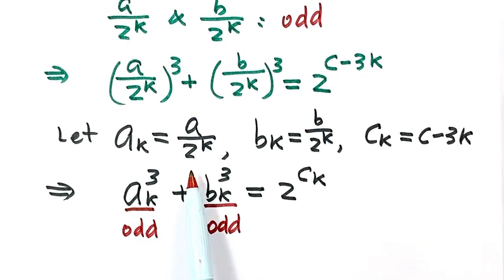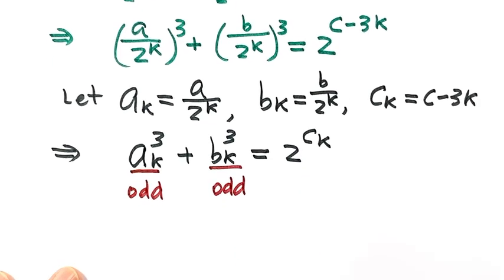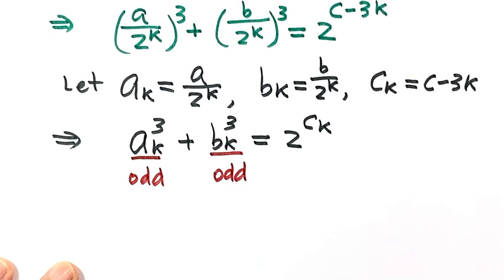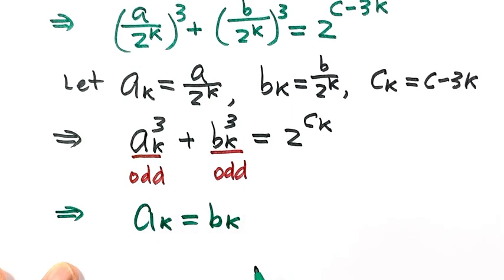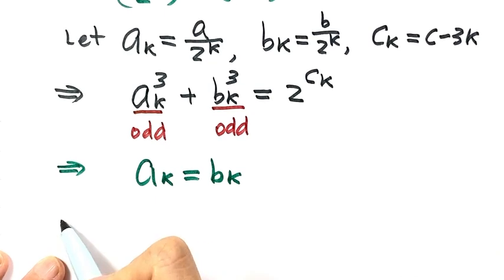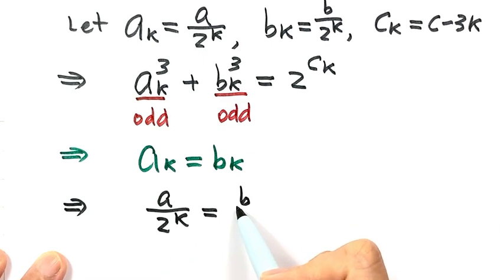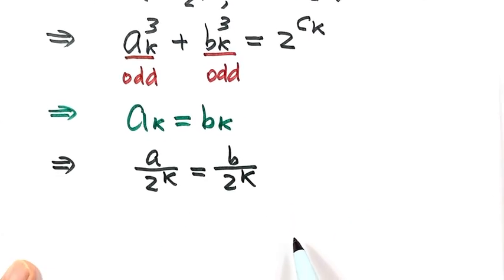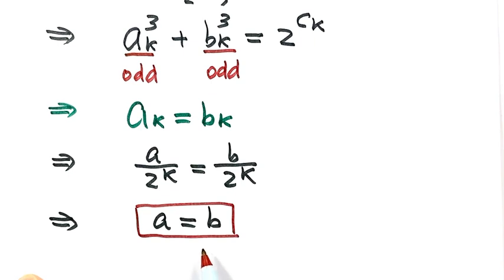Since AK and BK are odd numbers, we can apply the result of Case 1, which gives AK equals BK. Since AK = A/2^K and BK = B/2^K, we get A/2^K equals B/2^K, and therefore A equals B. This proves the second case: when A and B are both even numbers, A must equal B.